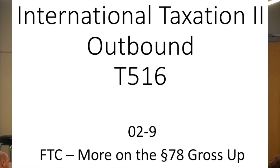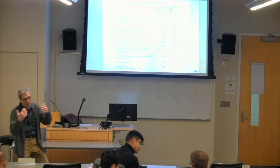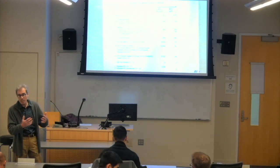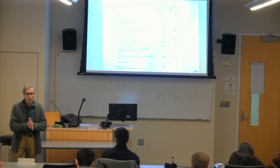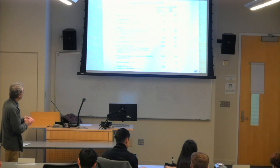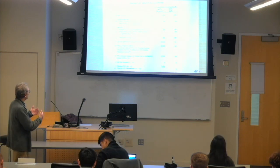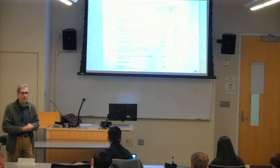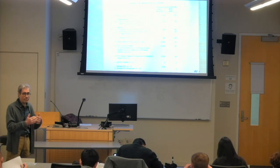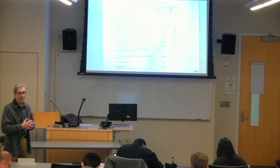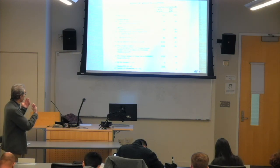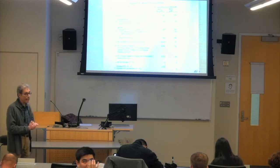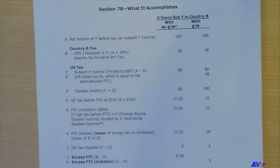This is an attempt to follow up on Jim's question of what the Section 78 gross-up really means. With that, I'd like to put up on the board the computation which I sent out a few days ago as being at least my concept of an explanation of why Section 78 is there. Let me say a few words and then I'll open it up to what you either understand or don't understand about this issue.